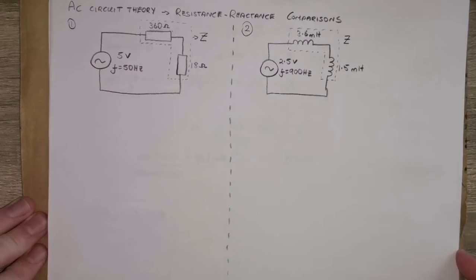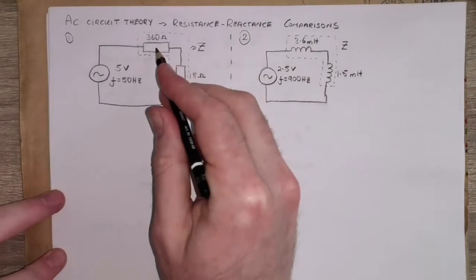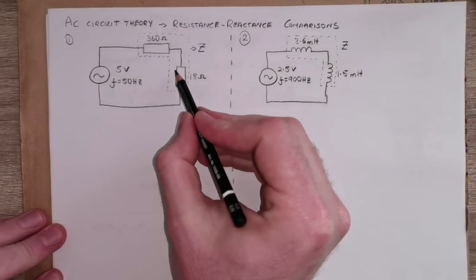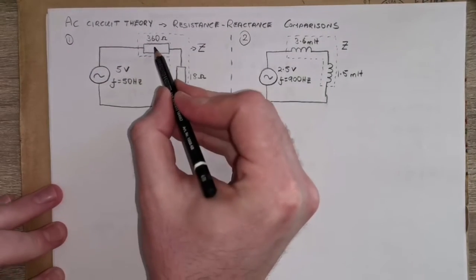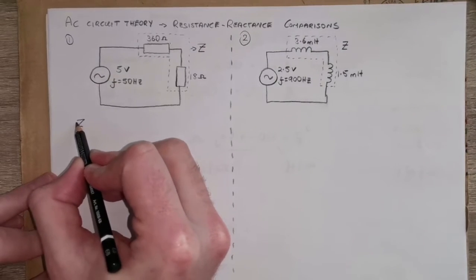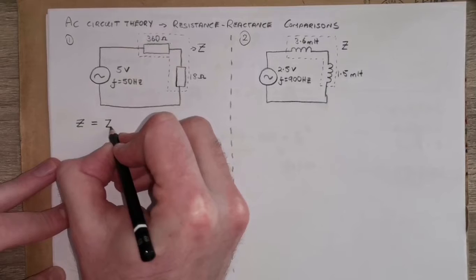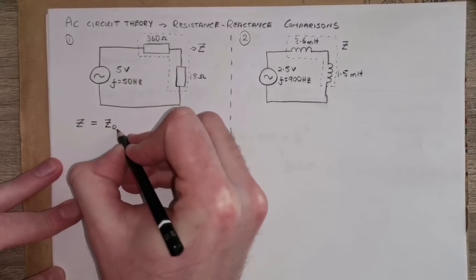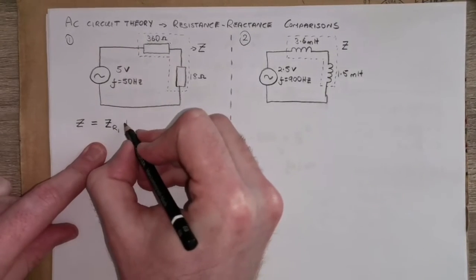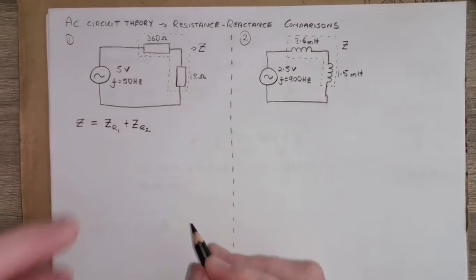When dealing with these questions it makes sense to represent all of our resistor elements as impedances. Let's deal with this circuit here — it has two resistors in series. So the total impedance will be the impedance of the first resistor Zr1 plus the impedance of the second resistor Zr2.